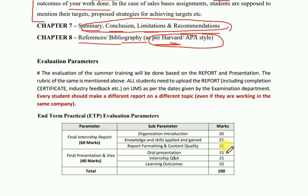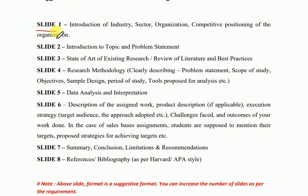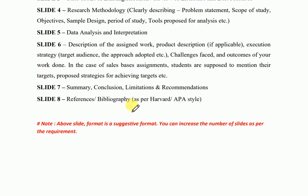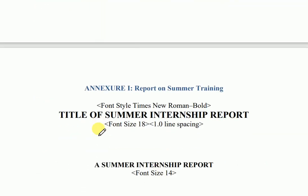Regarding evaluation: 60 marks are for your report and 40 marks are for your Viva. As for your presentation, we are telling you that a minimum of 8 slides is required. The first slide should cover your introduction and all those things already explained. If you want to showcase more related to your summer internship, you are good to go — you can increase the number of slides as needed.